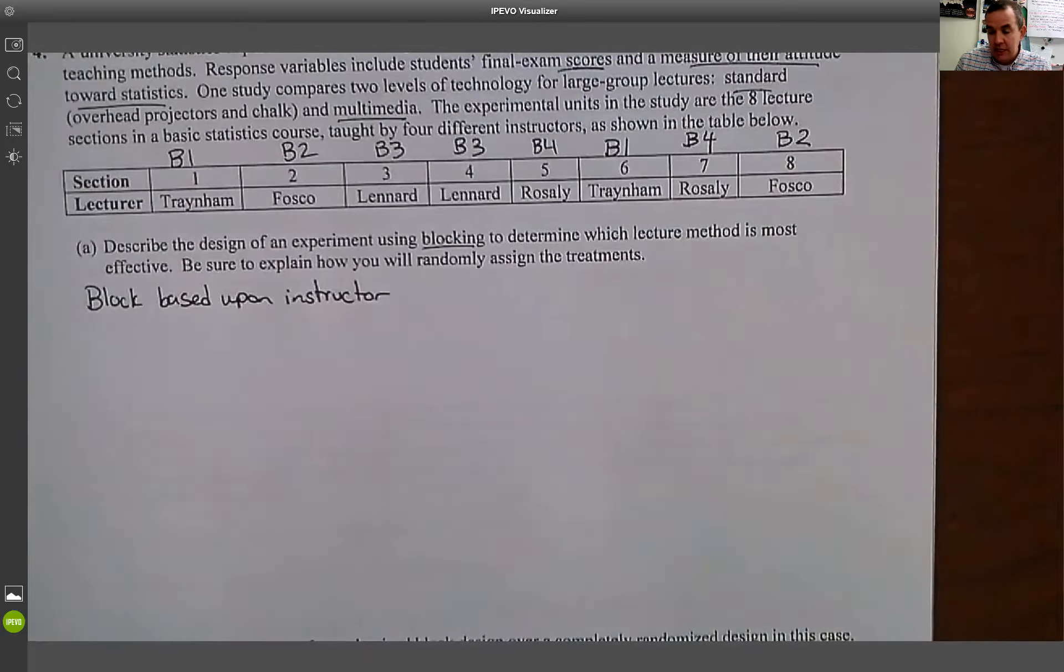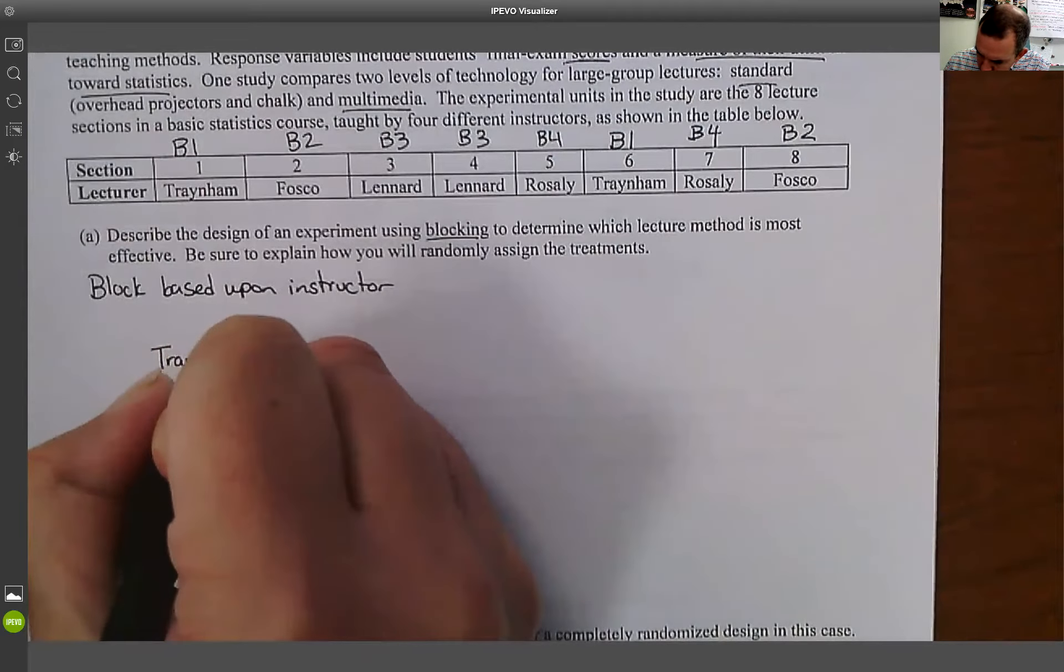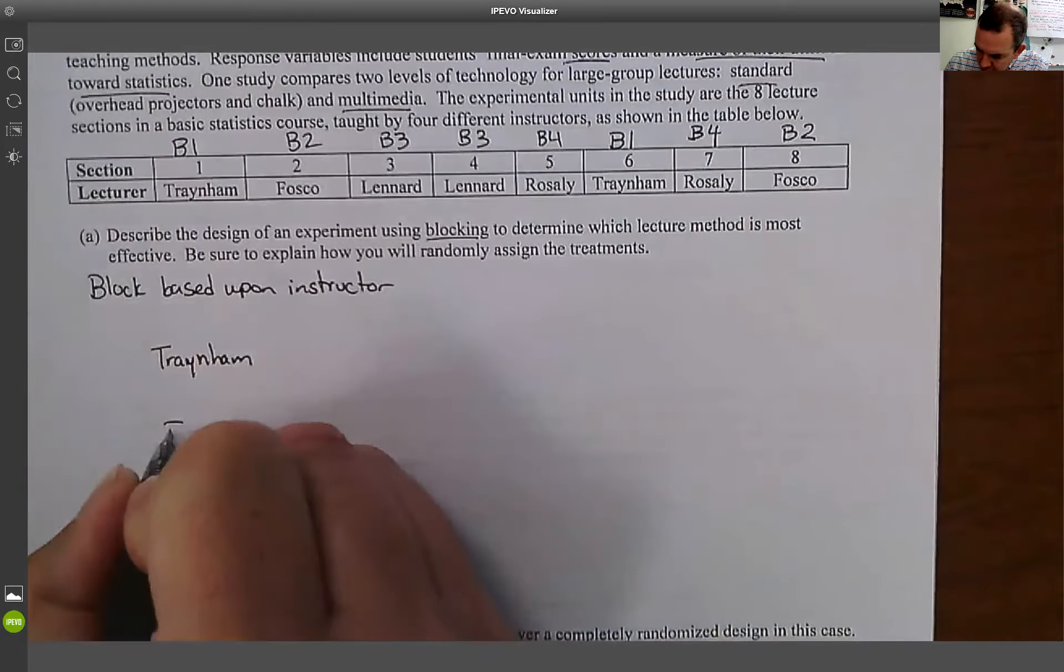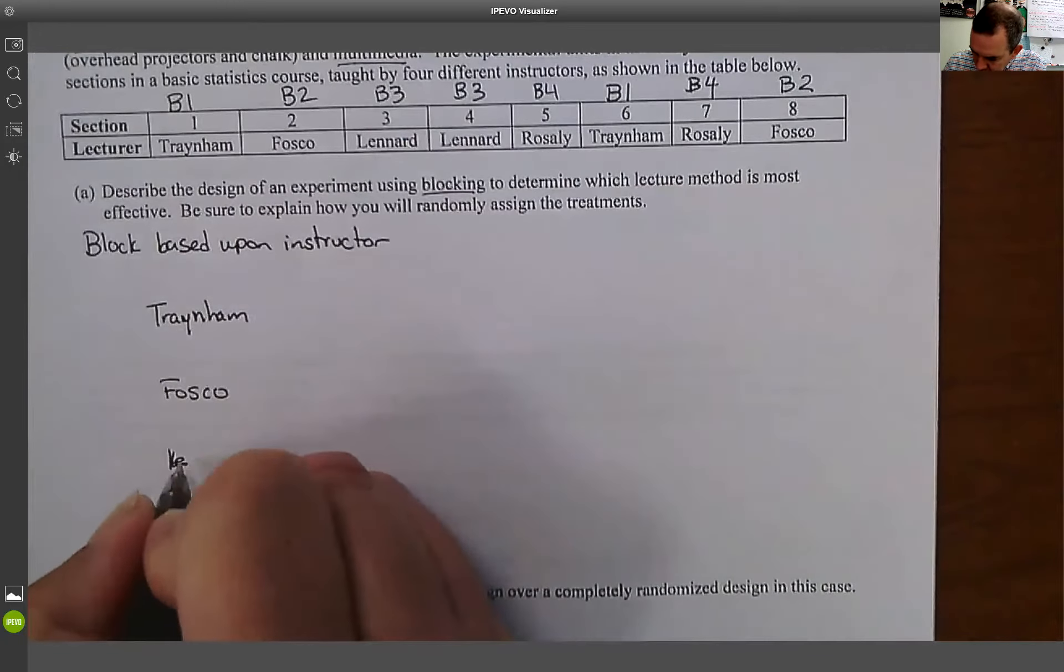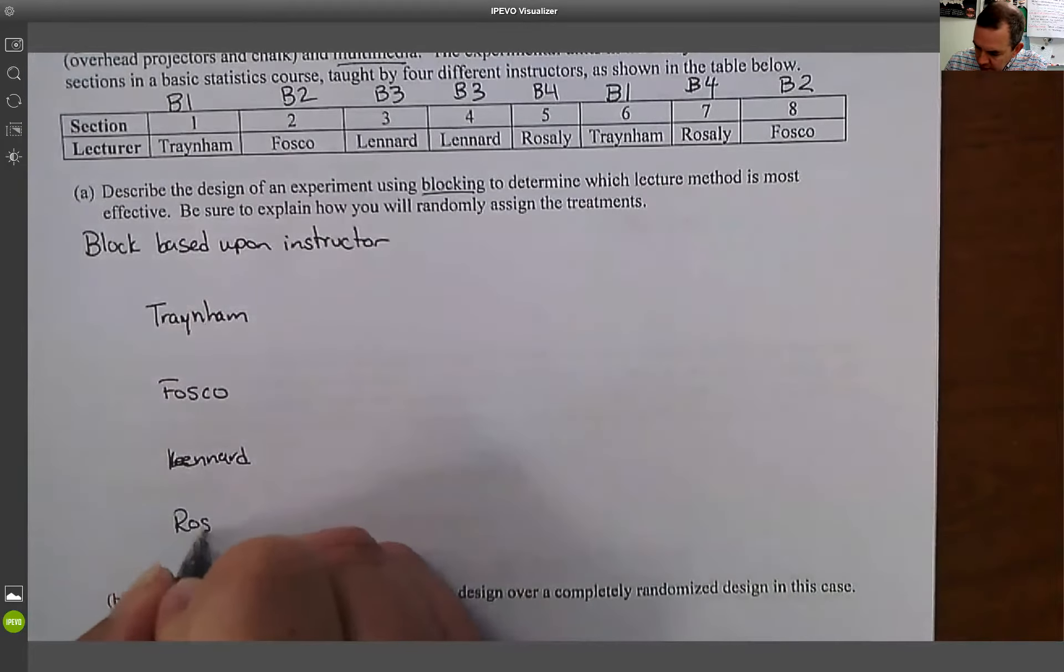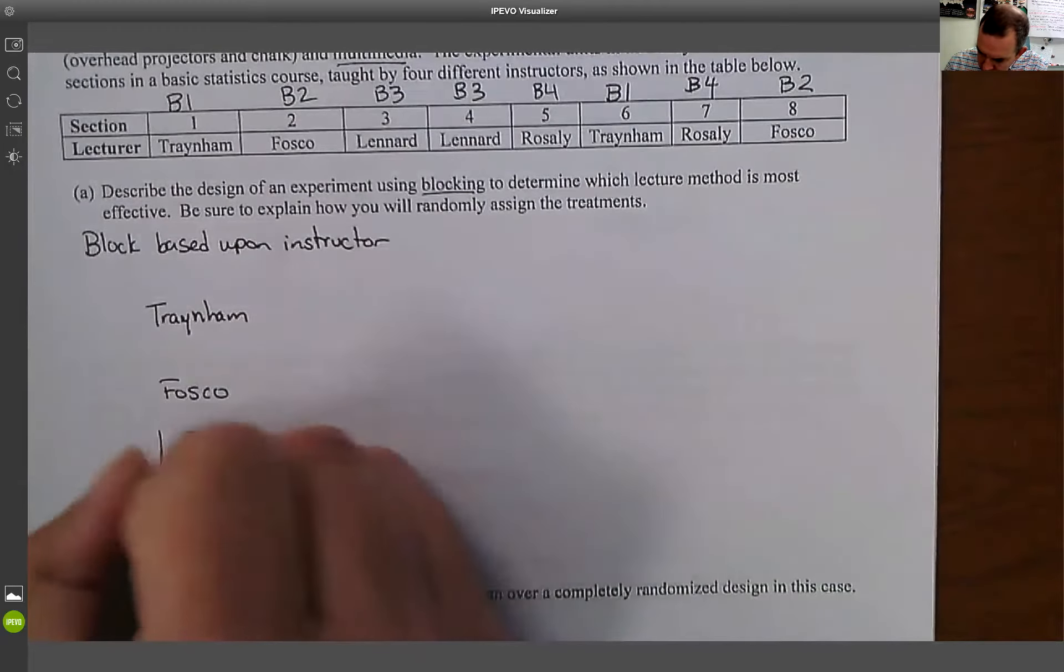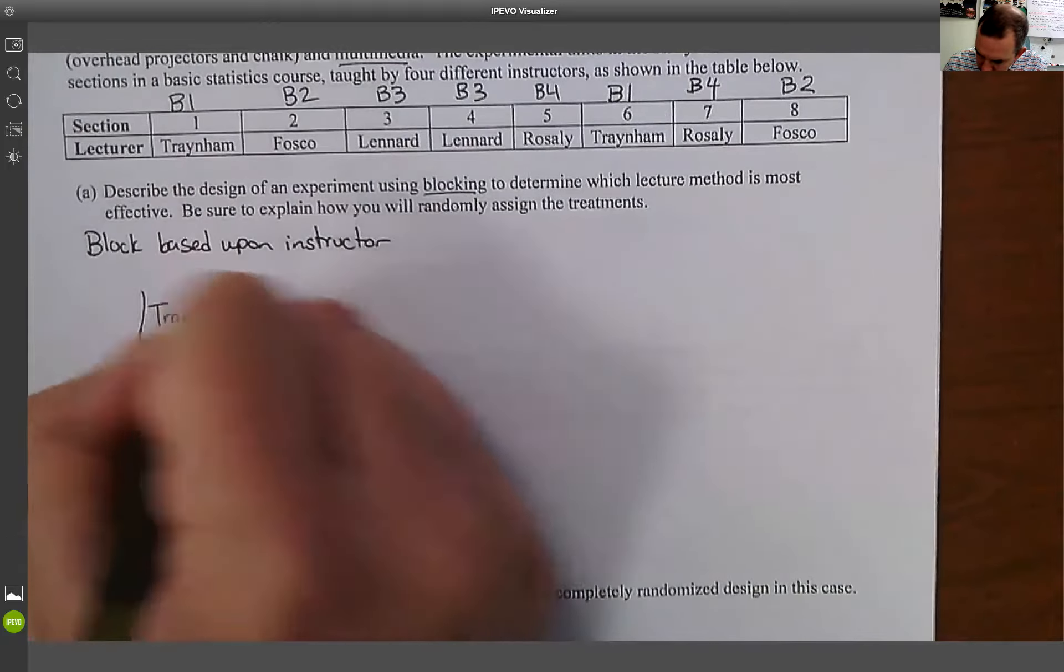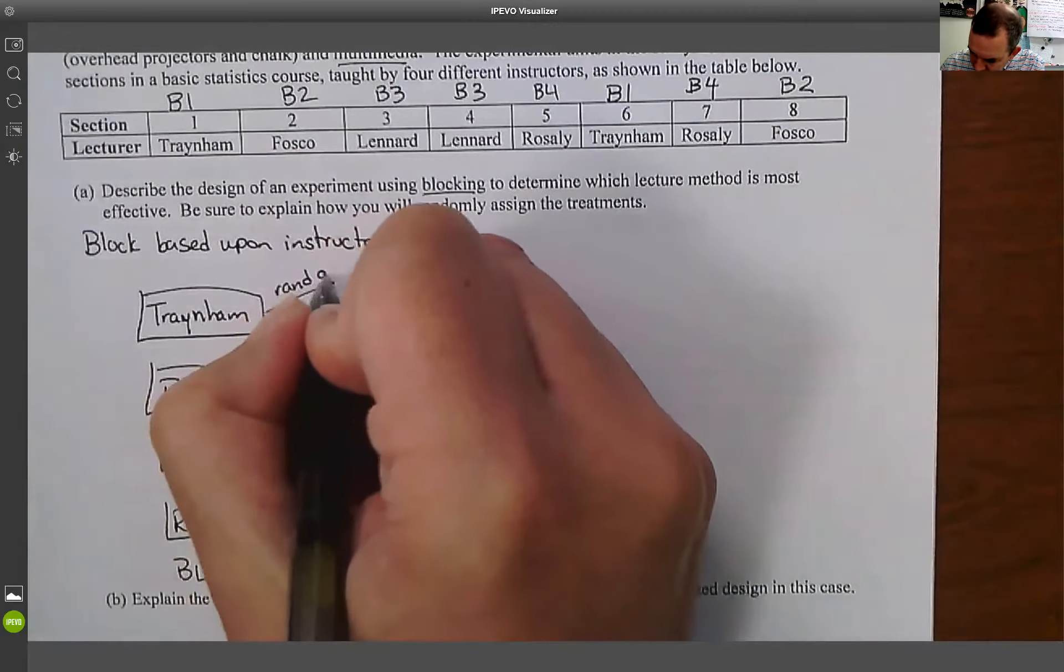Okay. So now what's going to happen is I have separate blocks. And what I'm going to do is inside those blocks, I'm going to randomly assign one section to the traditional lecture and the other section to the multimedia. So what will end up happening is you'll see this thing, the blocks are going to be. So we're going to have Traynum as a block, we're going to have Fosco as a block, we're going to have Lennard as a block, and we're going to have Rosalie as a block. So these are all my blocks.